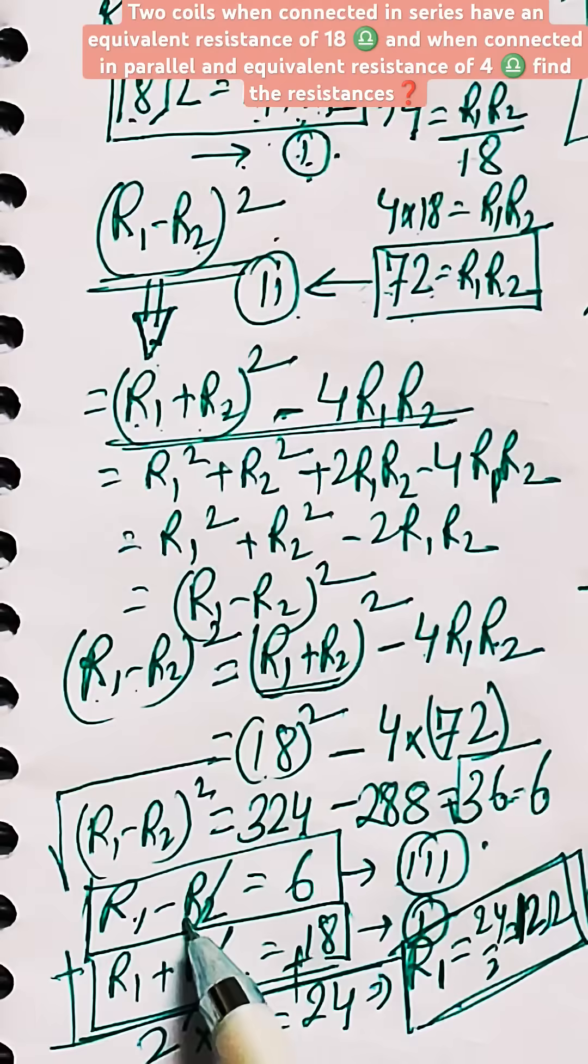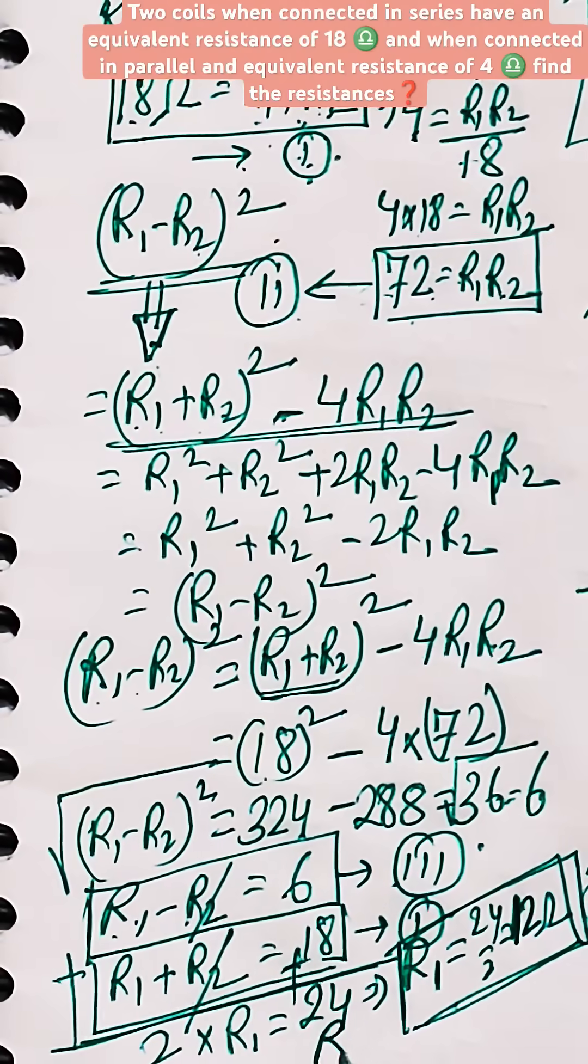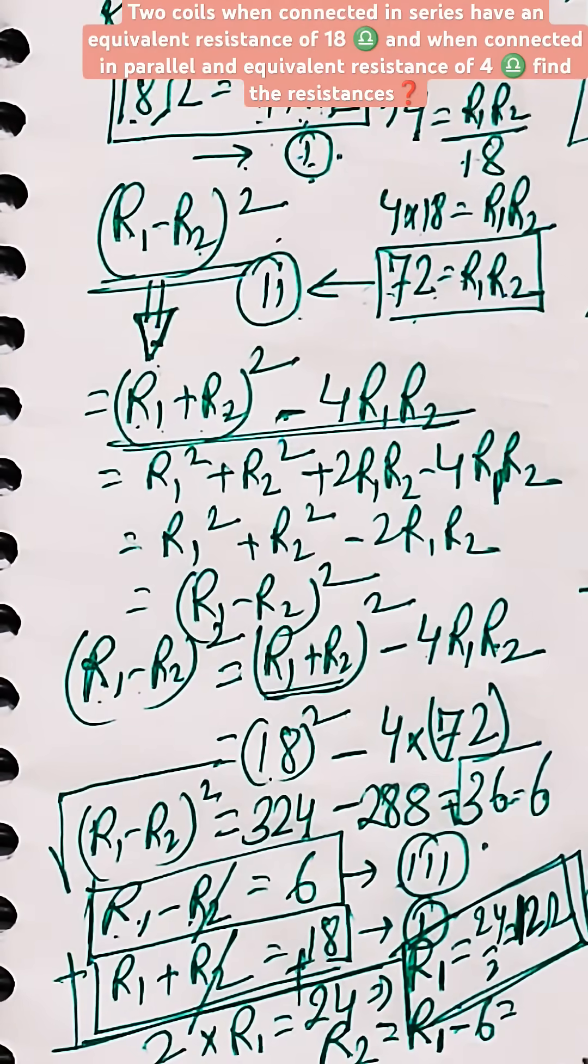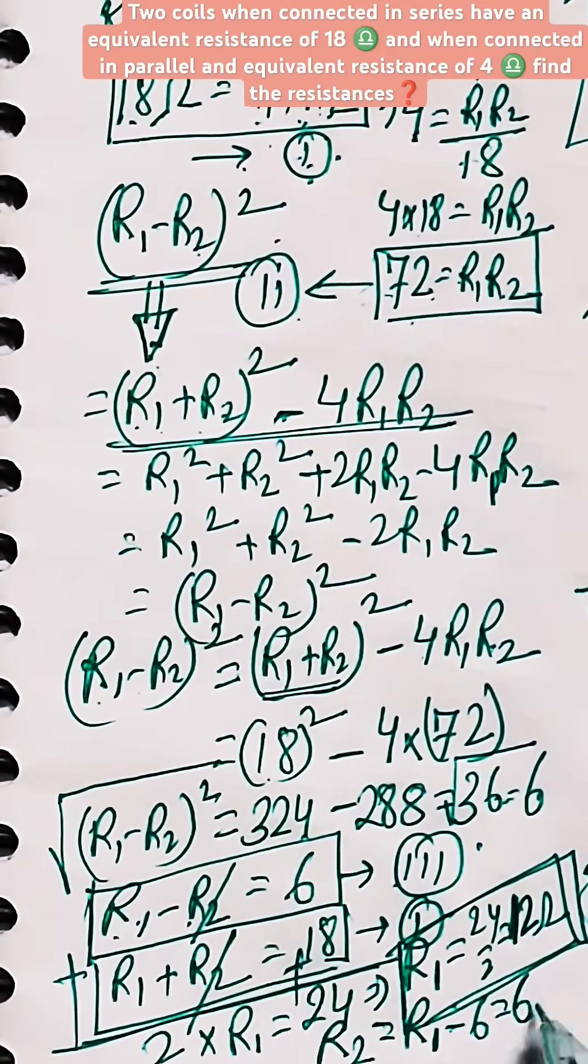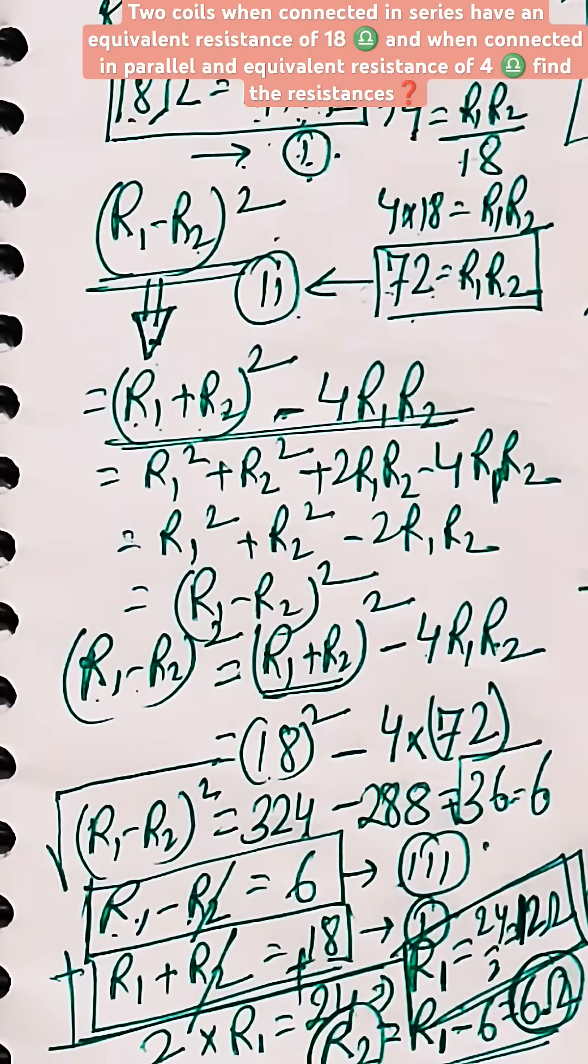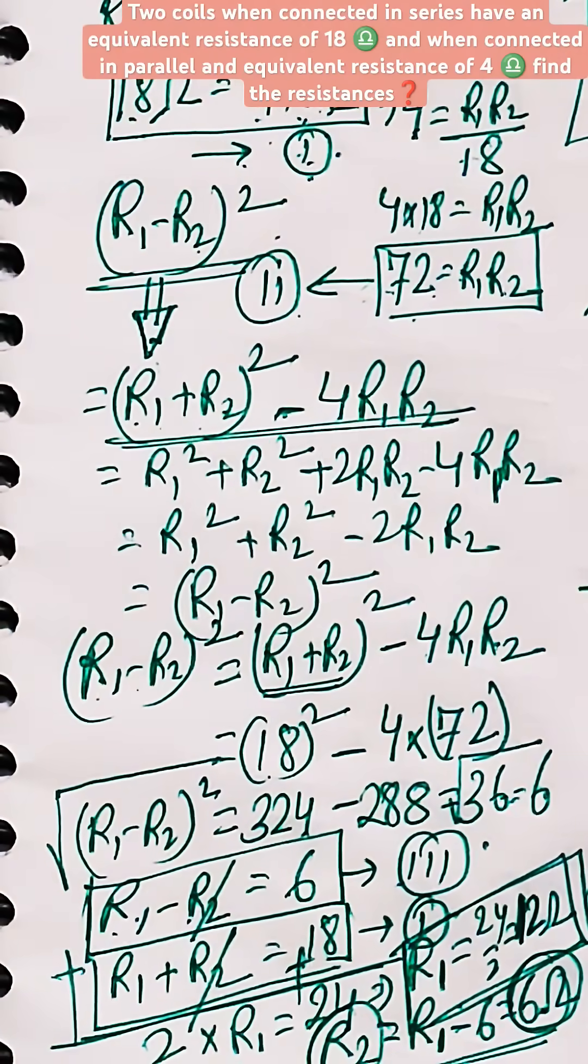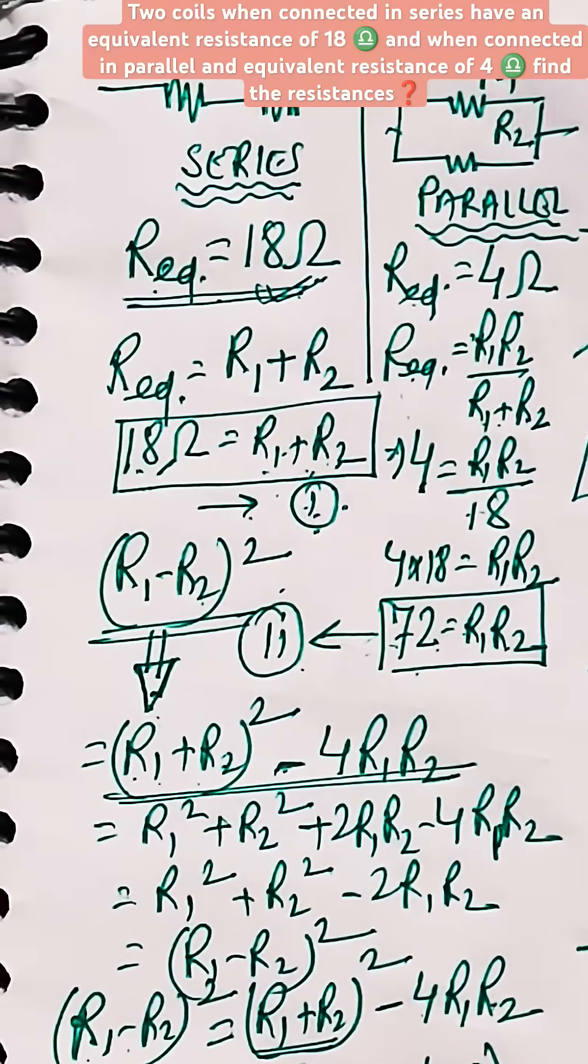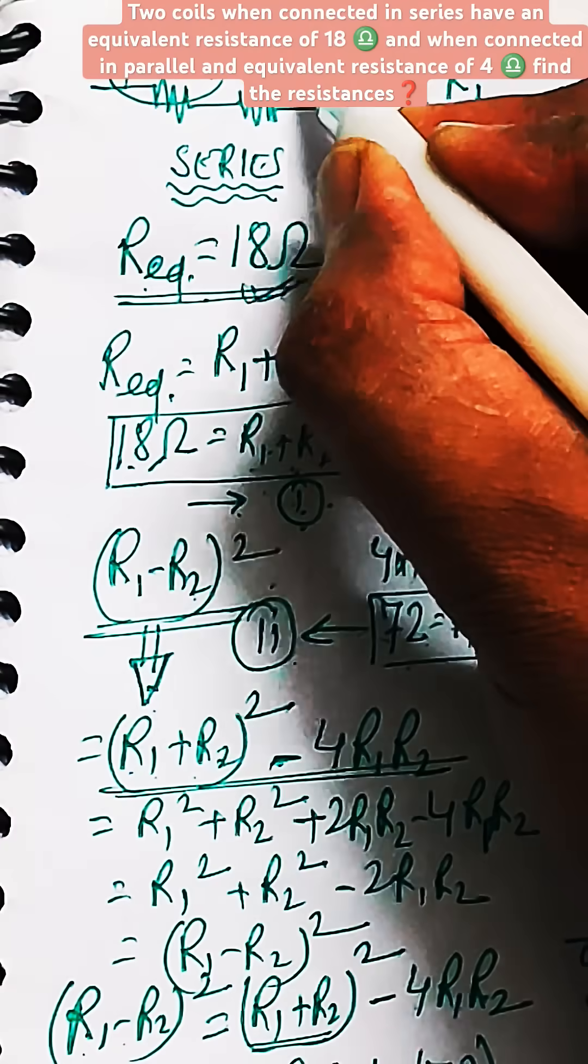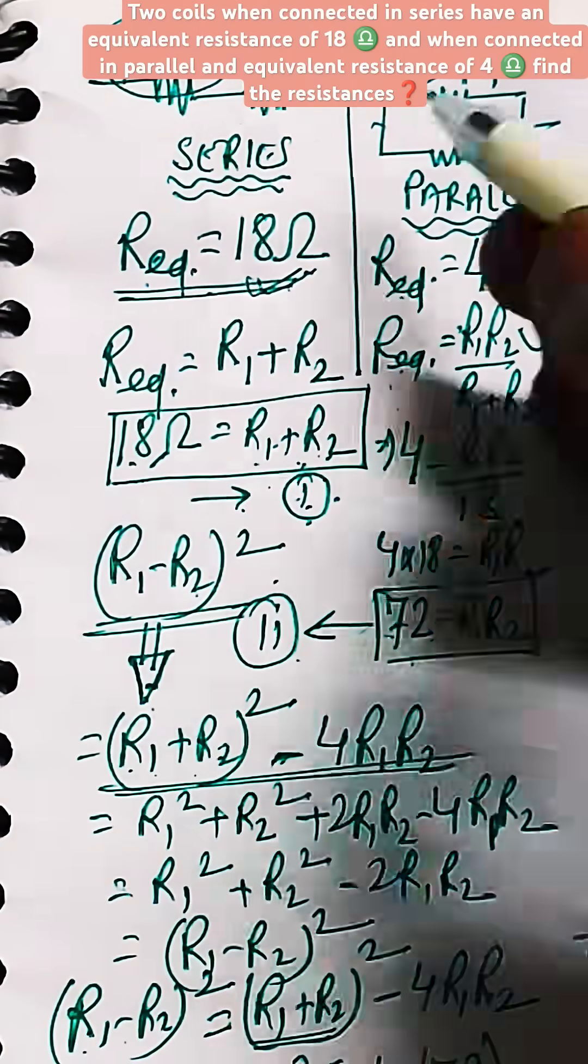Now from equation number 3, you can see the value of R2 can be written as R1 minus 6. So from equation number 3, R2 is R1 minus 6, which is coming as 12 minus 6, which is equal to 6 ohm. So R2 is calculated as 6 ohm. In this way we have solved the question and derived the value of R1 and R2. So R1 is 12 ohm and R2 is 6 ohm. Thank you.